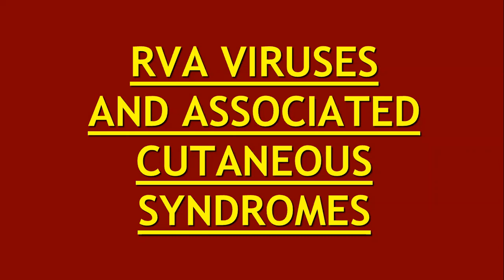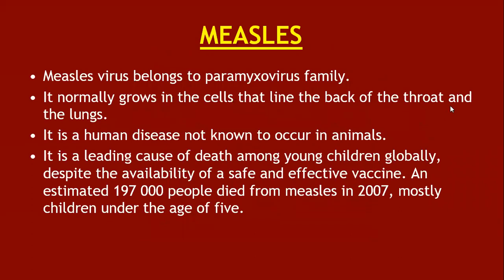This lecture is part two of RNA virus and associated cutaneous syndromes. Measles virus belongs to the paramyxovirus family; it normally grows in cells that line the back of the throat and the lungs. It is a human disease not known to occur in animals and is a leading cause of death among young children globally despite the availability of a safe and effective vaccine. An estimated 197,000 people died from measles in 2007, mostly children under five years of age.